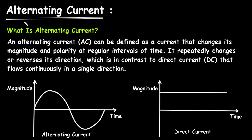What is Alternating Current? An alternating current, AC, can be defined as a current that changes its magnitude and polarity at regular intervals of time. It repeatedly changes or reverses its direction, which is in contrast to direct current, DC, that flows continuously in a single direction.